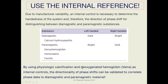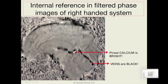Physiologic calcifications — that is, pineal gland calcification or choroid plexus calcification — and deoxygenated hemoglobin seen in veins or dural sinuses can be used as internal controls. The directionality of phase shifts can be validated to correlate phase data to diamagnetic and paramagnetic material. This is a sagittal filtered phase image where we can see pineal gland calcification which is white and a vein which is black, and these two are taken as internal reference for a right-handed system.